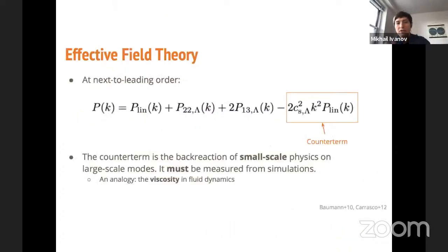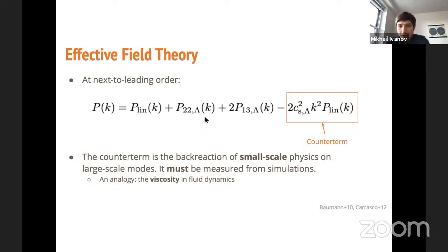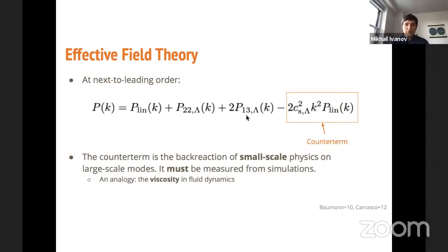When you take all these things into account you can compute the one-loop matter power spectrum: it equals the linear theory term plus the usual one-loop contributions evaluated at a certain UV cutoff scale, plus a counter-term involving the sound speed. One contribution from the sound speed cancels the UV dependence of the loop integrals, and the other is a finite contribution controlling the physical effects of short-scale clustering that back-react on large scales.